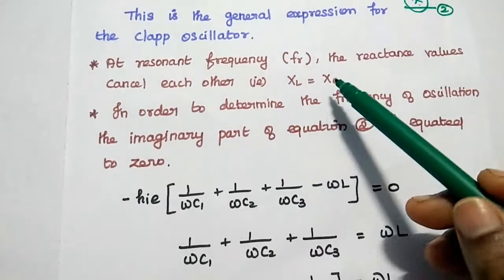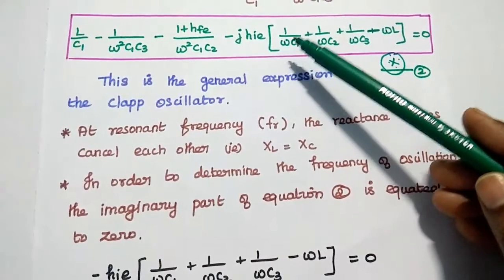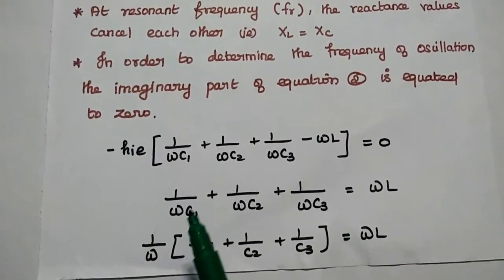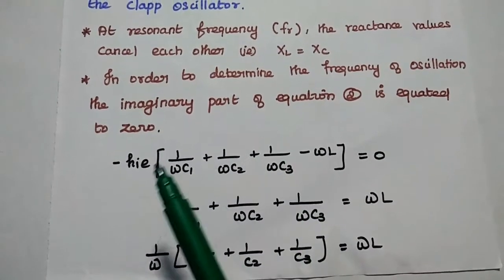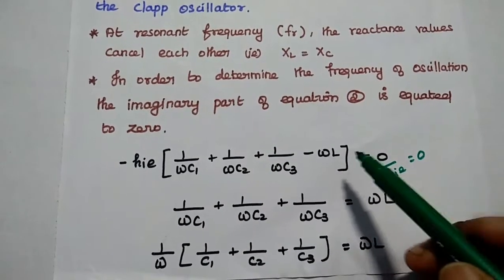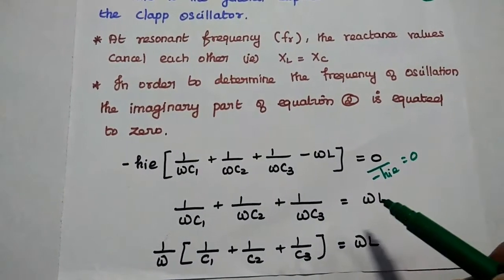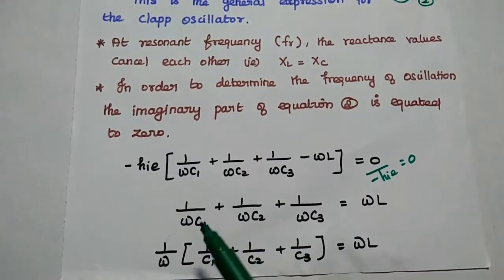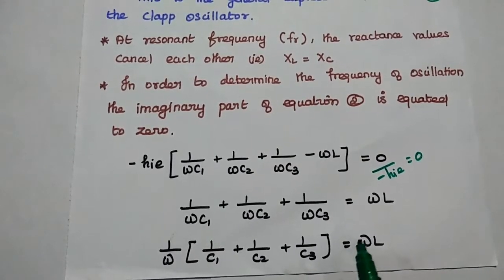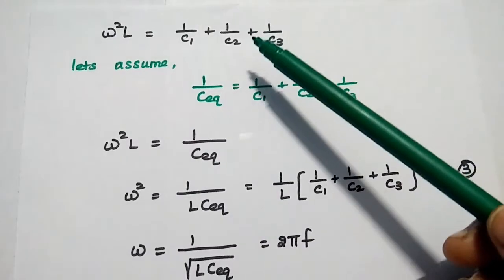Setting the imaginary term to zero: 1/(ωC1) + 1/(ωC2) + 1/(ωC3) = ωL. Taking 1/ω as a common factor: (1/ω)·(1/C1 + 1/C2 + 1/C3) = ωL. Rearranging: ω²L = 1/C1 + 1/C2 + 1/C3.